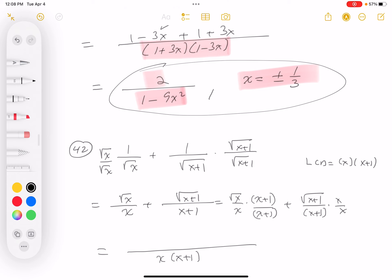What do you get on top? Well, I'm going to be careful here. So it's going to be x plus 1 times root x plus x times root x plus 1.